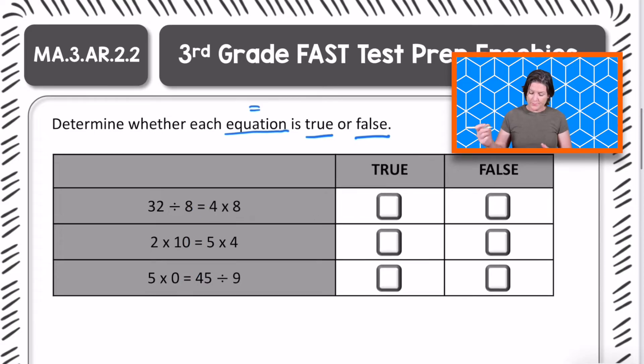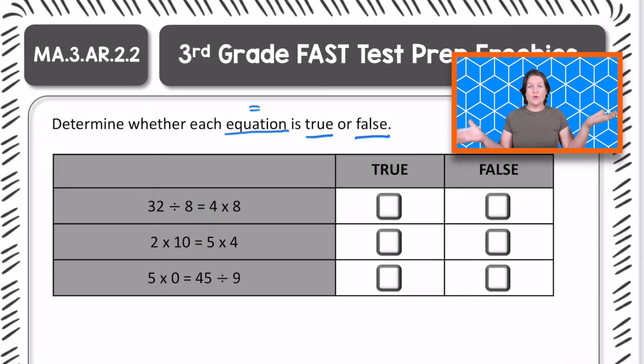So what we need to do is I see two sides of the equation. And the cool thing about an equation is that if it's equal, both sides must have the same value. So we need to find the value of the left side and the right side and see if they are equal. If they are, we'll pick true. And if they're not, we'll pick what? False, that's right.